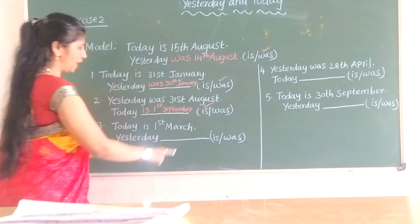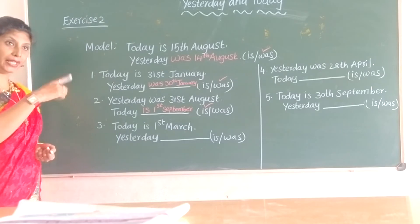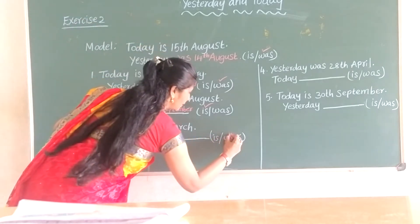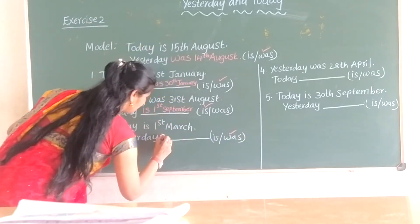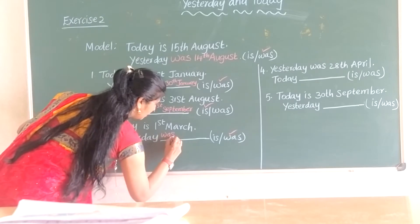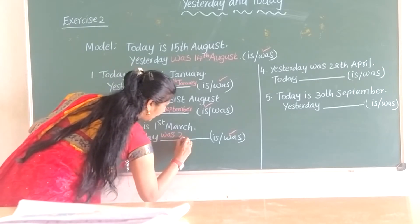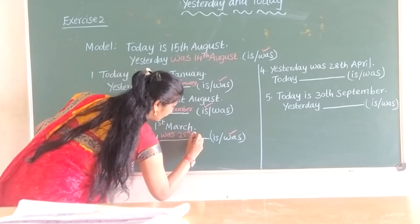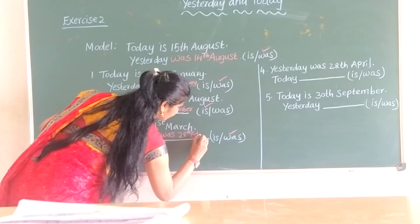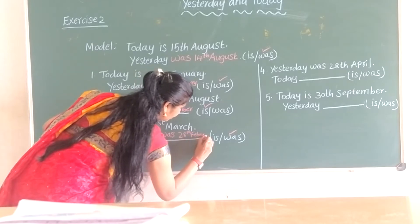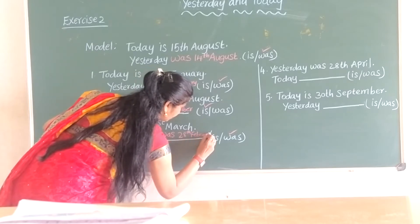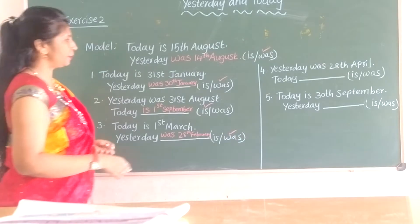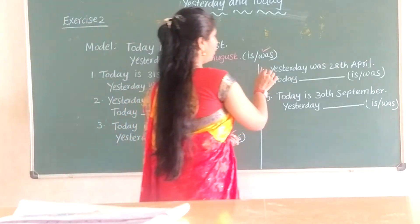Today is 31st March. Yesterday means 'was'. Yesterday was 28th February. Understood? 28th February.